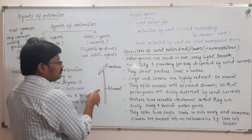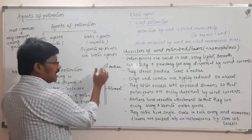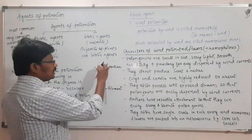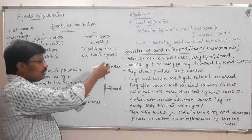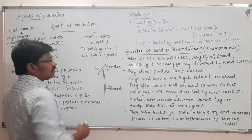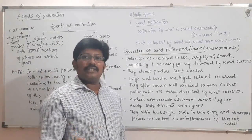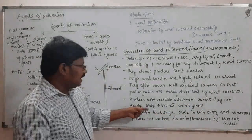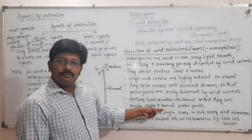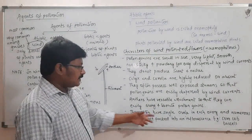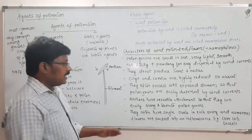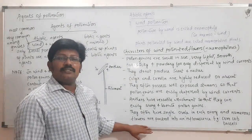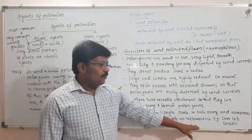With versatile attachment, the anther can move freely from the center point and easily release pollen grains into the air. These plants often have a single ovule in each ovary, and numerous flowers are packed together, producing structures called inflorescences.